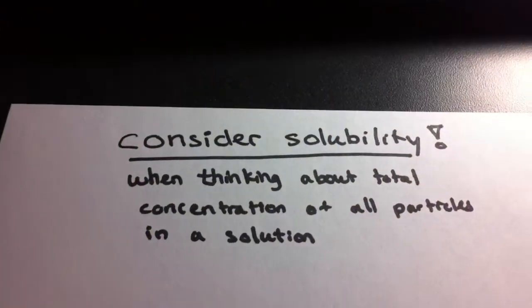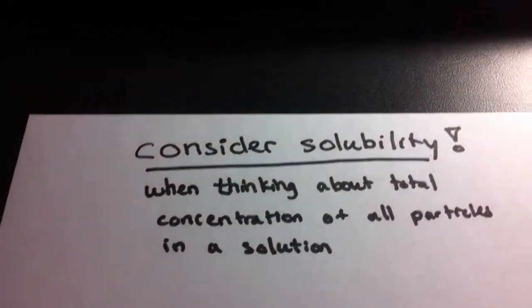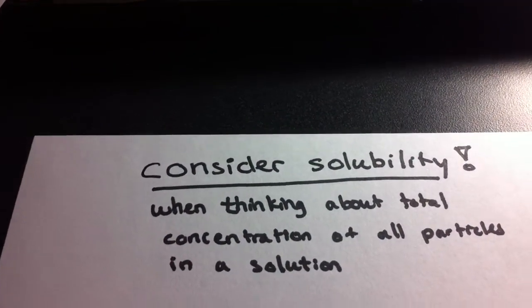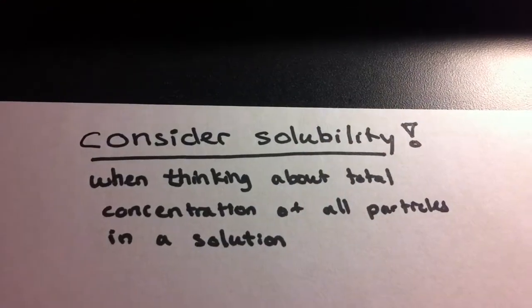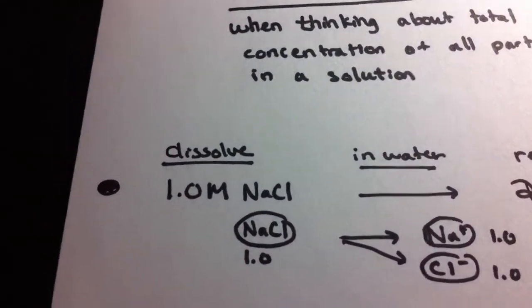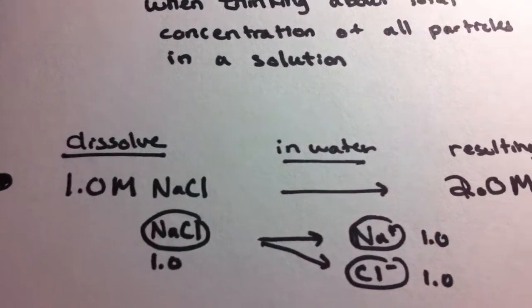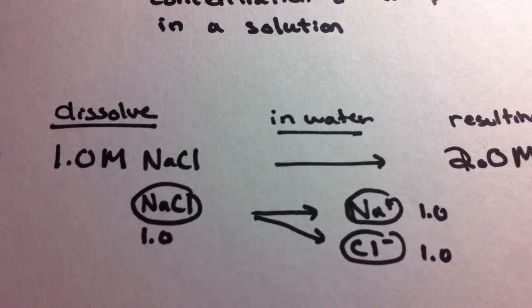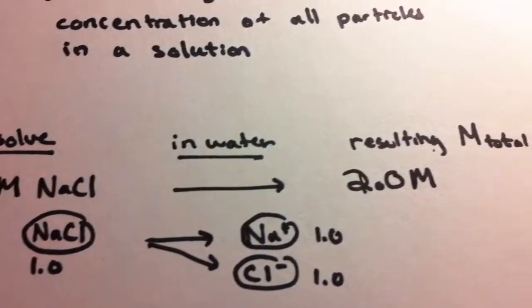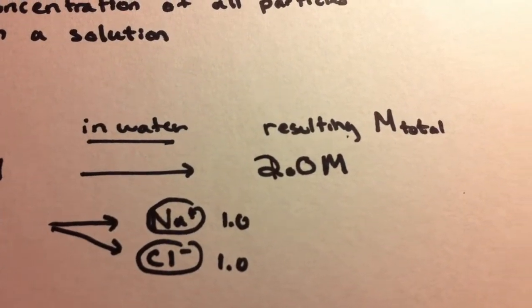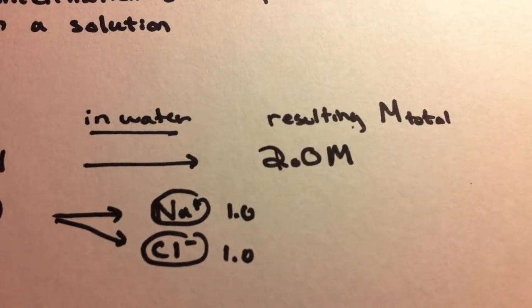Talking about solubility in general, we have to always consider when we put them in, how much are they going to dissociate? For example, NaCl: if you put in one molar, it's going to dissociate into two individual ions. This will result in a total molarity of two molars.